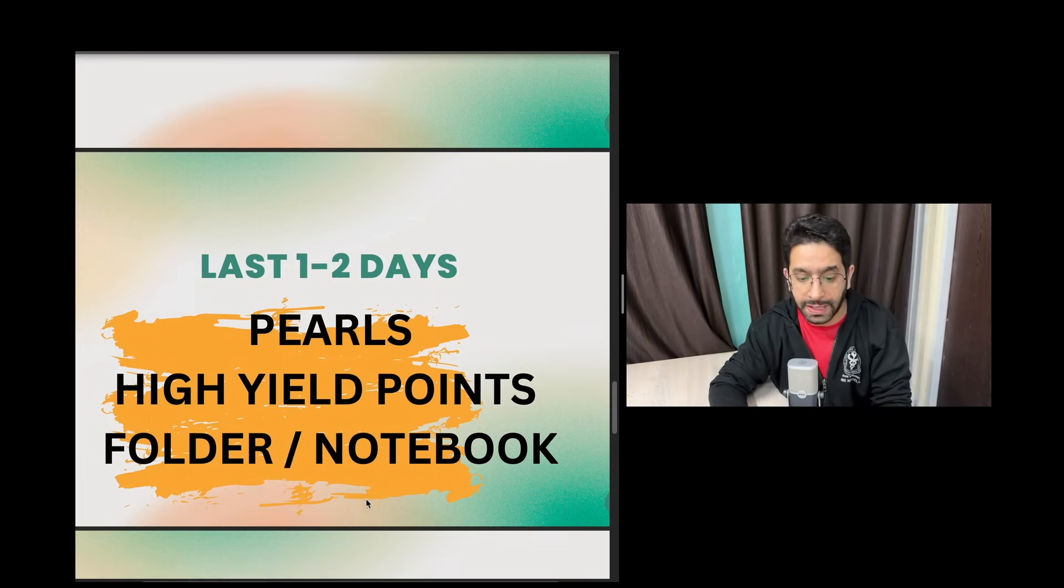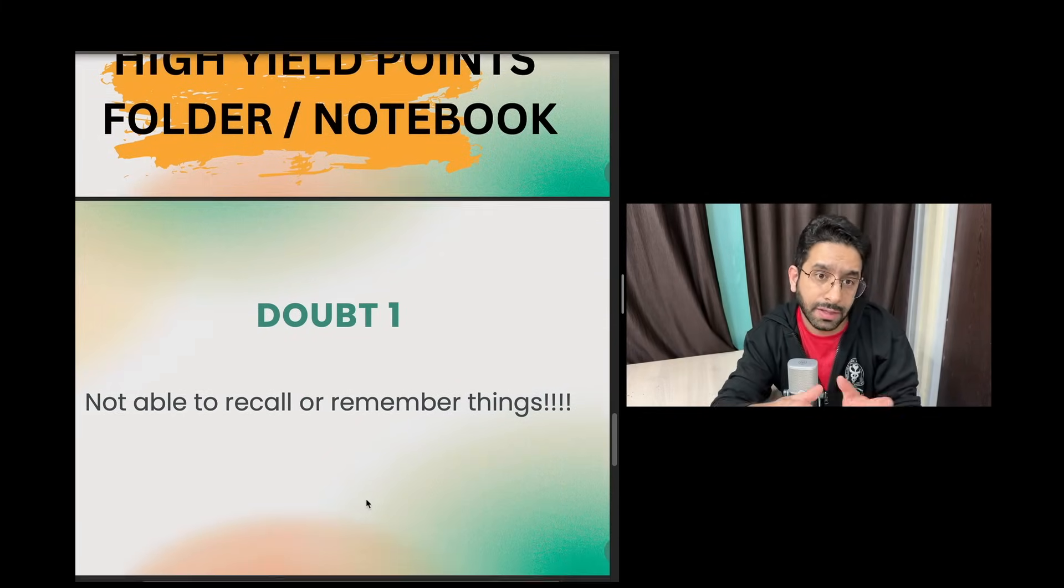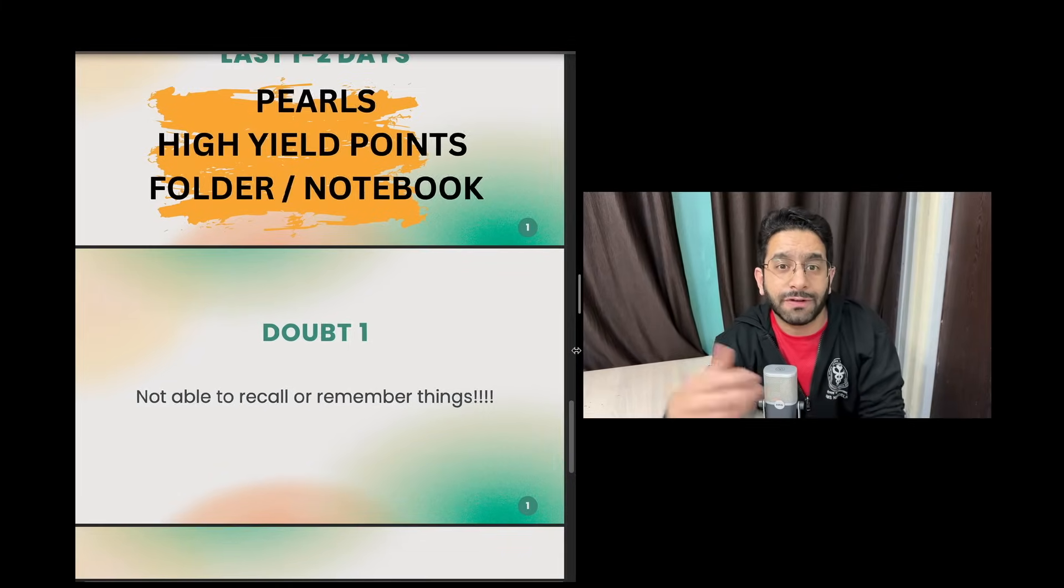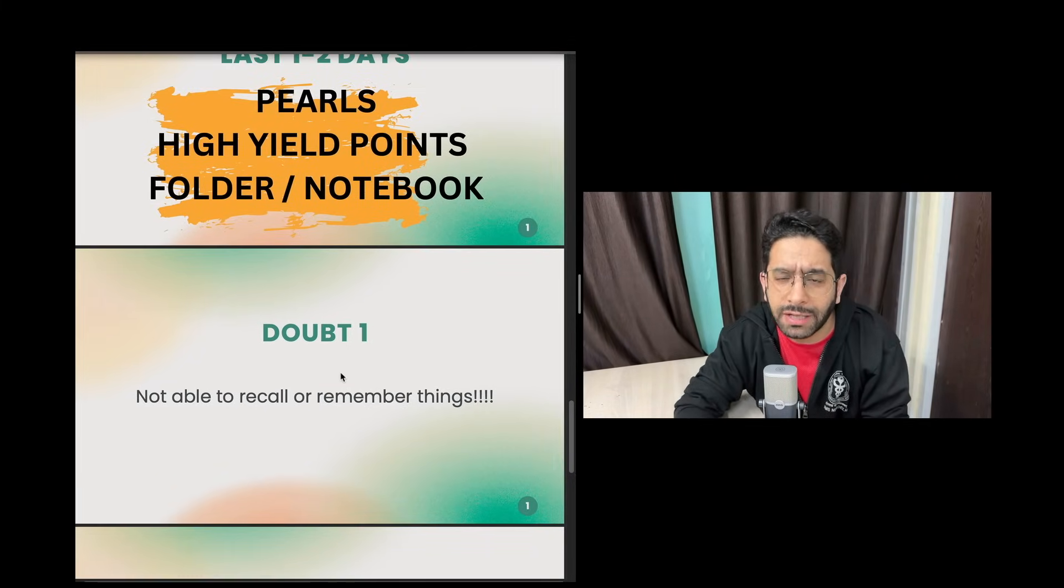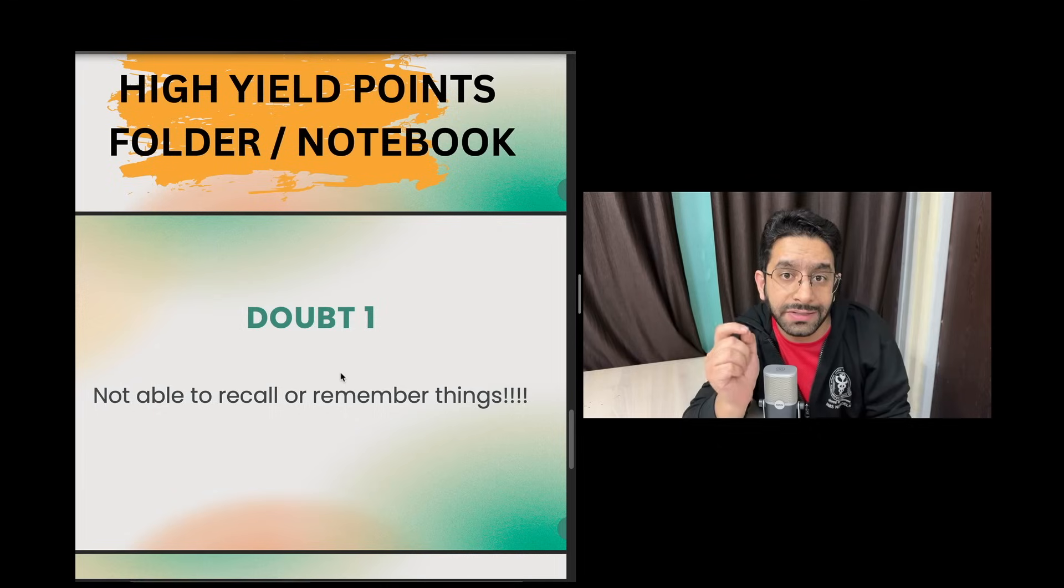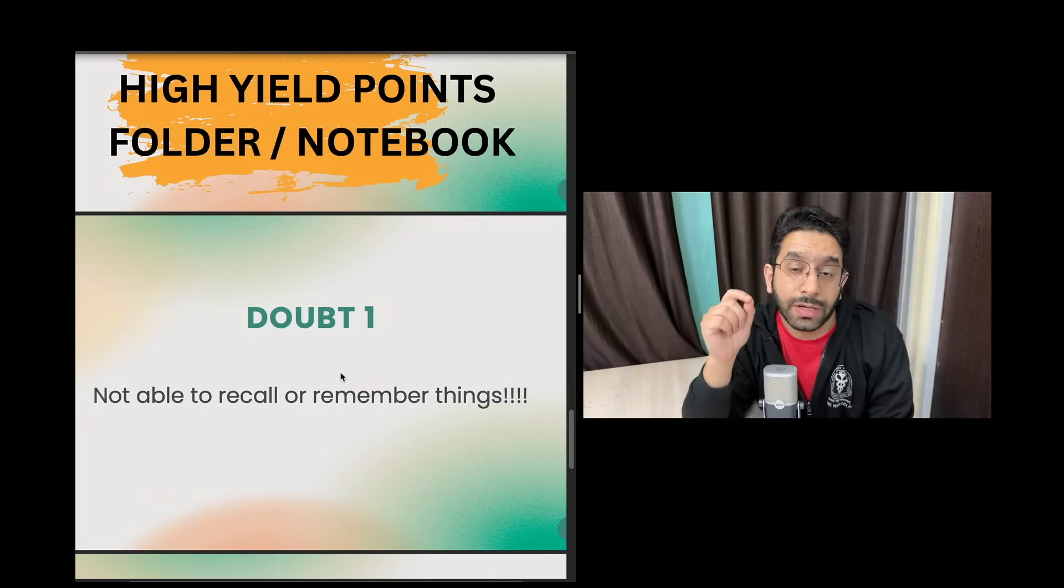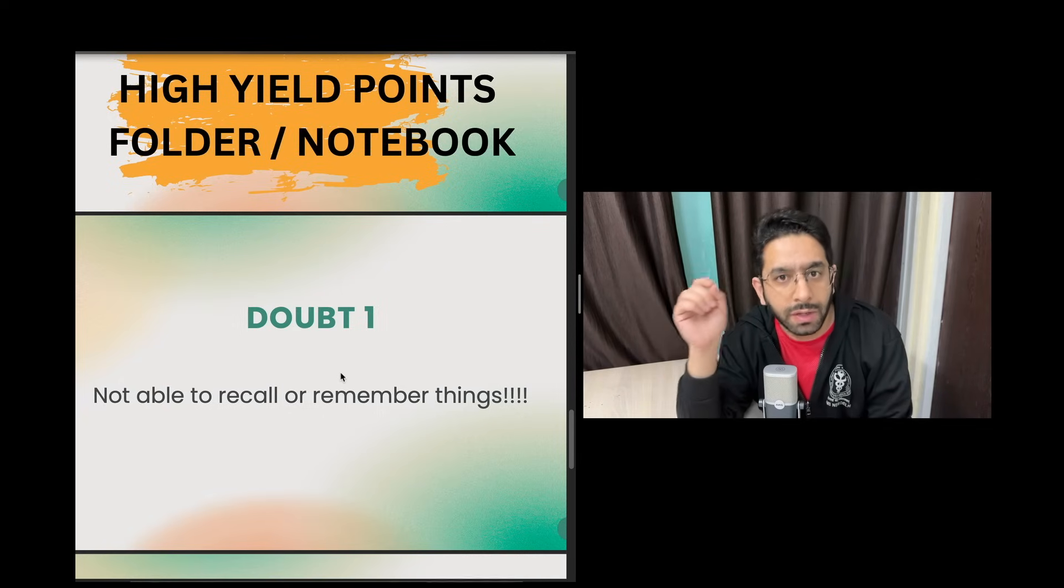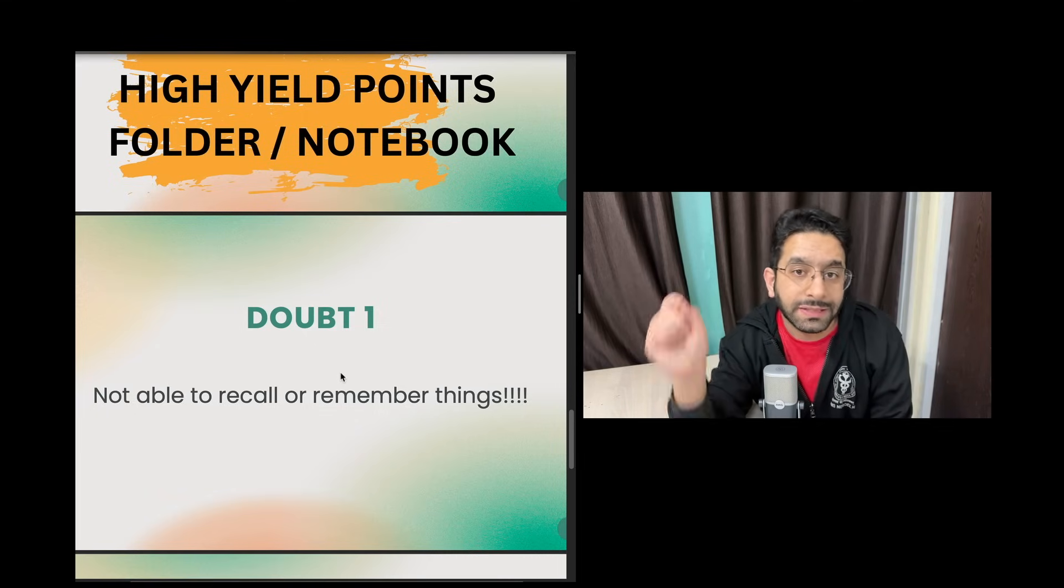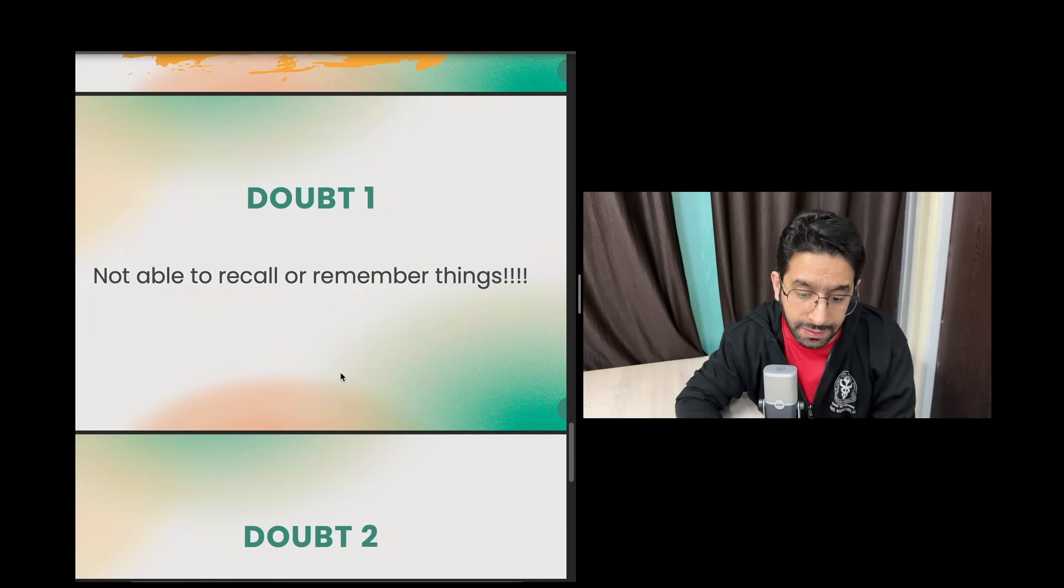Some doubts that you might have - number one, it's quite natural that as you're preparing you feel a little under-confident, that you're not able to remember lots of things, not able to recall a question when a friend asks you. It's okay, it happens with everyone. These are 19 huge subjects and we just need that amount of preparation that you can identify the correct answer out of the four options. That's all you need to do. You don't need to understand everything about apoptosis or necrosis or everything in pathology of heart or medicine of kidney. You just have to have enough information in your mind that you pick the right option or at least rule out two wrong options. Then you can have that 50% probability. Remember, you don't need to master everything.